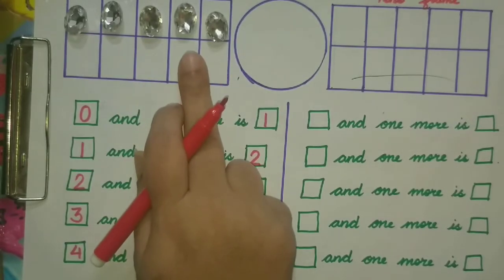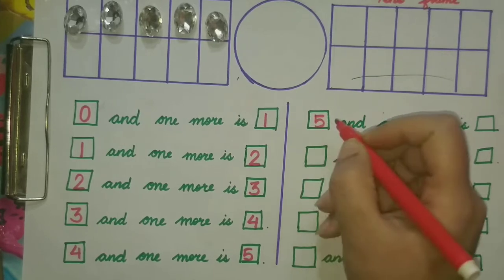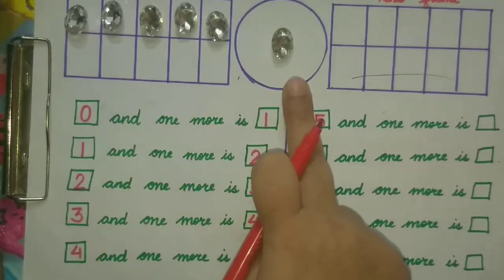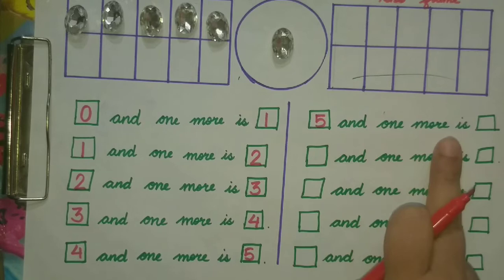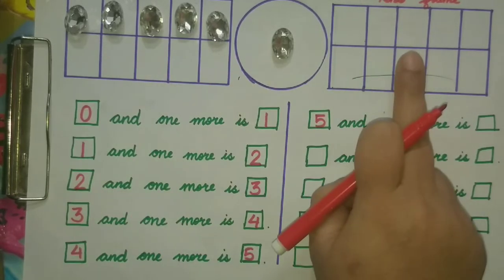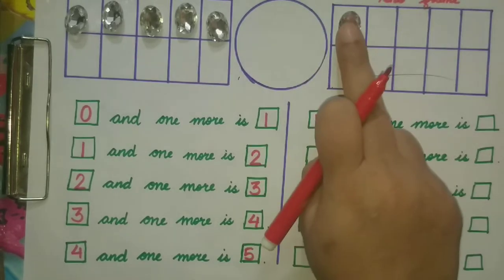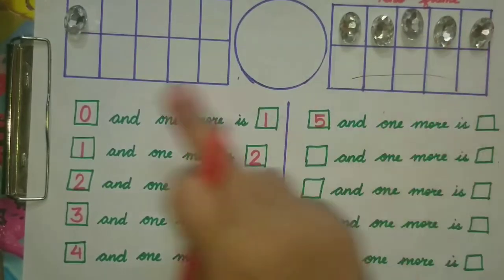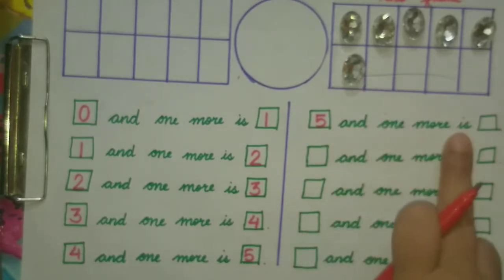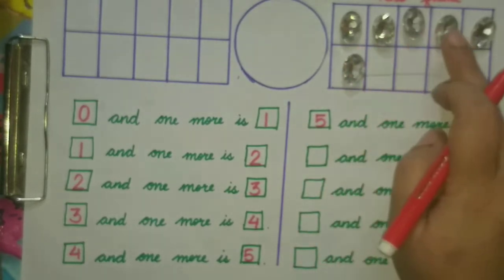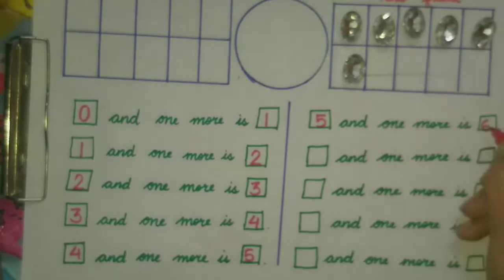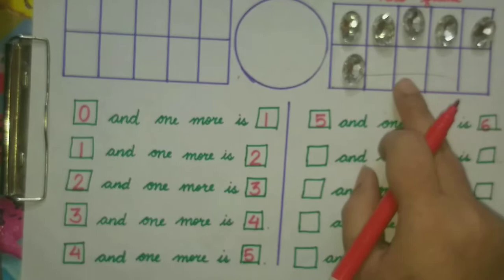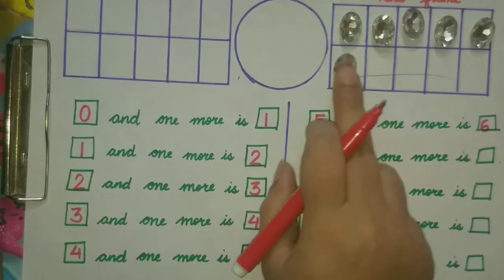What is the first number? 5. So we will write 5 here. 5 and 1 more — we have to find out. So we will bring them together to the ten frame. 5 and 1 more is 6. This answer will become our next question, so we will bring the 6 here.